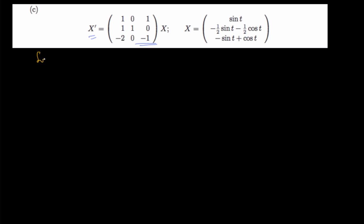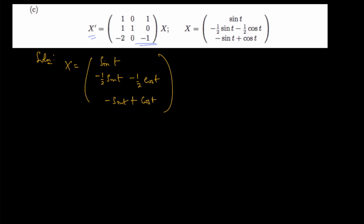Let me start by writing the solution. The left-hand side says the derivative of x. What we are given as x is: x equals sine of t, minus half sine of t, minus half cosine of t, then minus sine of t plus cosine of t. So to check the left-hand side, we need the derivative of x, which is the derivative of each of the entries in the matrix.